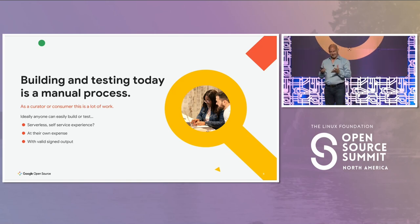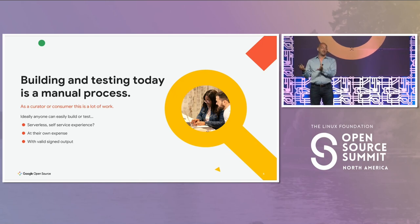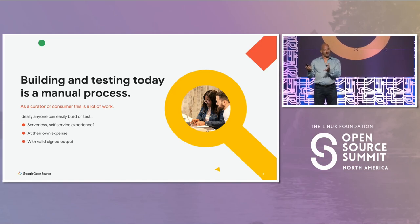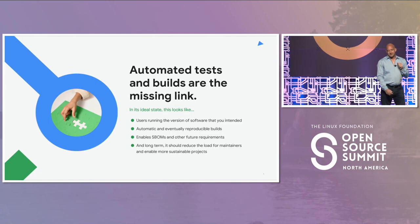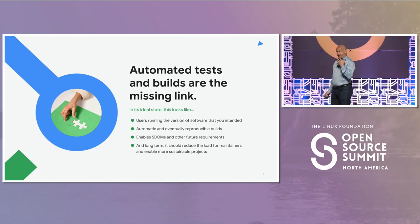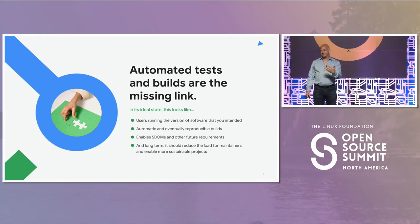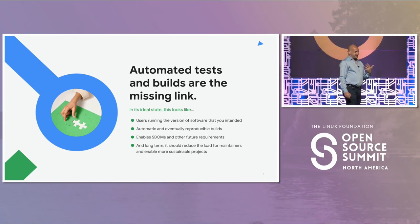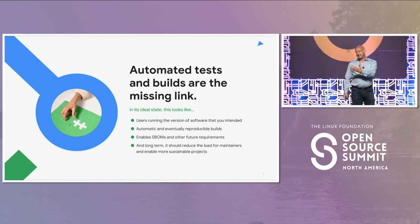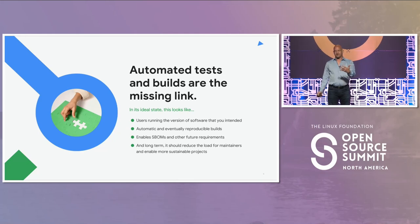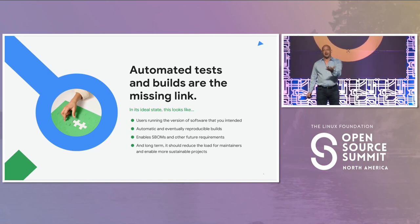A side effect of this is two things: we'd have the ability for someone else — including governments — to pay for builds they care about. We'd also start getting signed output: was it really built the right way or not? I want users to first know that the version they're running is actually the version intended, meaning built with the correct dependencies and reasonable toolchain. Reproducible builds are the obvious next step. If it's reproducible, someone else can build it and check it, giving us a level of transparency that would be great.